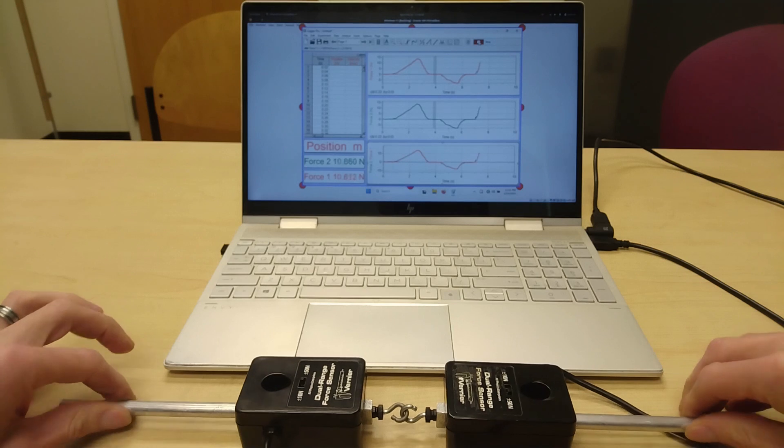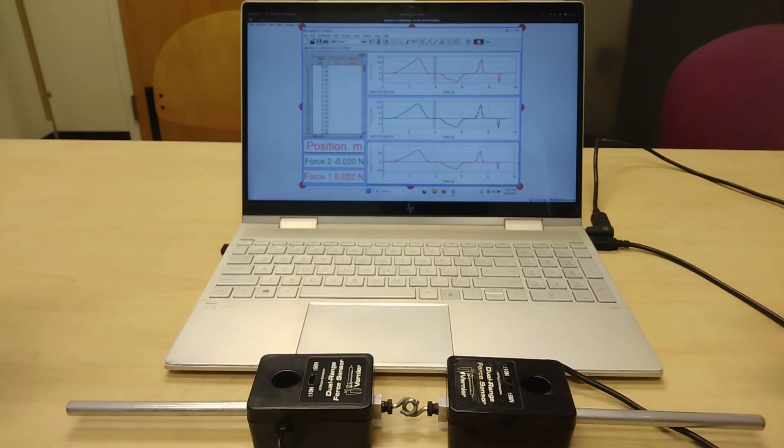And the bottom graph shows the forces of the two sensors, but we see only one curve. Why is that? Well, just because they are exactly the same, which confirms Newton's third law.